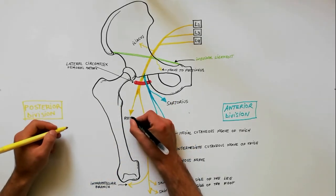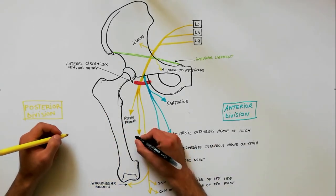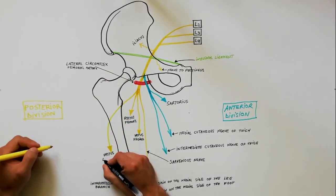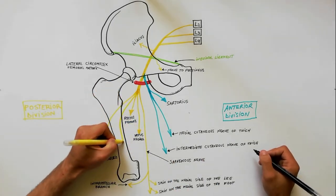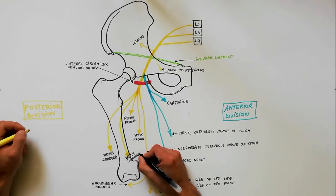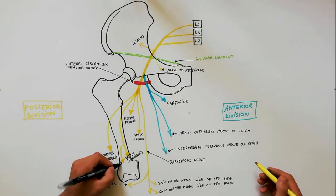The four muscular branches of the posterior divisions are branches to rectus femoris, vastus medialis, vastus lateralis, and vastus intermedius. The branch for vastus intermedius gives off a branch for articularis genu muscle.